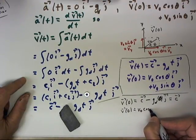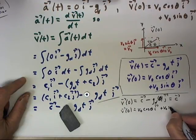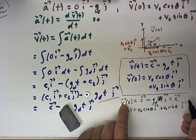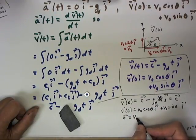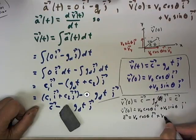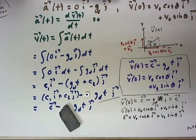v0 cosine theta i plus v0 sine theta j. So setting this expression for v0 equal to this, we find that c is just v0 cosine theta i plus v0 sine theta j according to our initial condition.